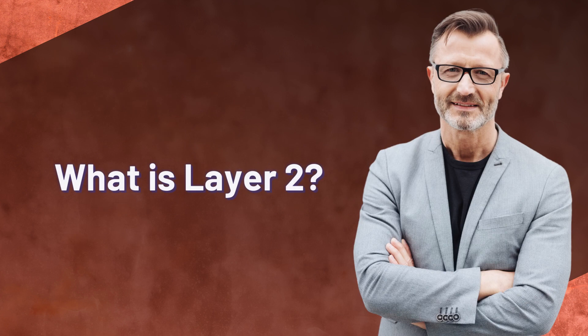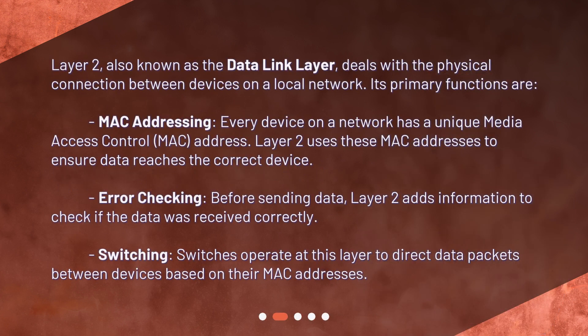What is layer 2? Layer 2, also known as the data link layer, deals with the physical connection between devices on a local network. Its primary functions include MAC addressing — every device on a network has a unique media access control address, and layer 2 uses these MAC addresses to ensure data reaches the correct device.